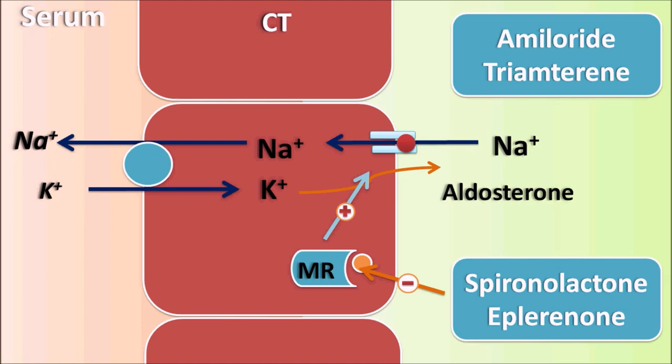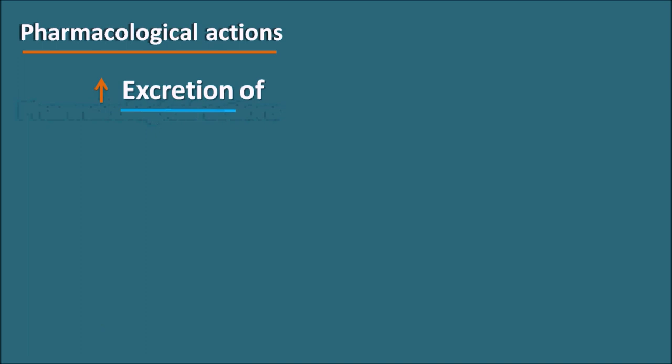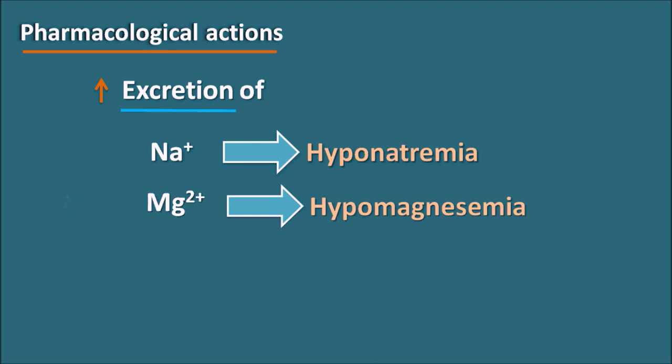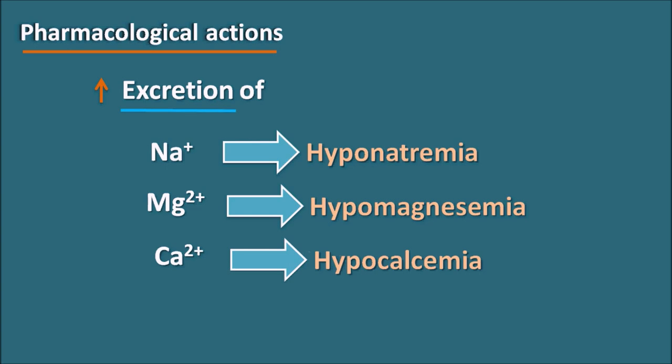Even though they differ in their mechanism, their pharmacological actions are somewhat similar. These diuretics increase the excretion of several important ions: they increase excretion of sodium (resulting in hyponatremia), magnesium (resulting in hypomagnesemia), and calcium (resulting in hypocalcemia). They also increase loss of water from the body, and along with water, sodium is excreted, reducing body volume and producing hypovolemia.